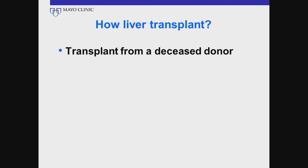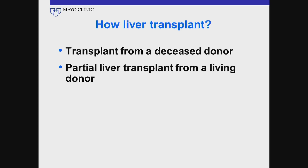So how does one do a liver transplant? The most common place a liver is obtained is from somebody who's died and agreed to be an organ donor, though obviously limited organs are available from that method. Around 1995, the concept of using a partial liver from a living donor emerged. The liver has an amazing capacity to regenerate itself, and if there's a match and somebody willing to undergo surgery and give up half a liver, that's another option.